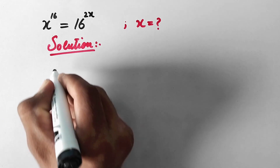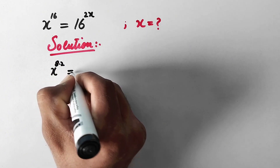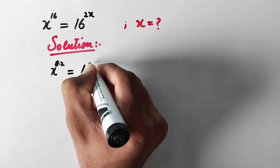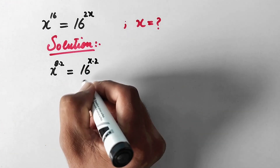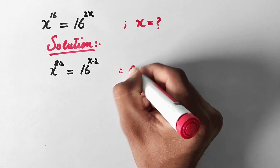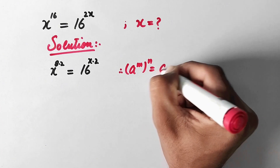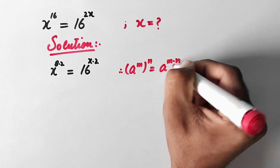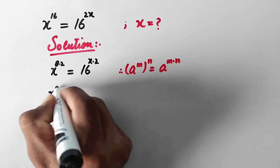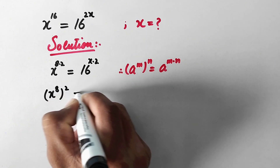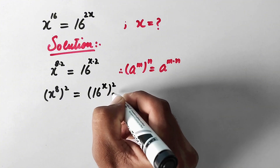In the first step we can write x to power 16 as 8 times 2 equals 16, and 2x can be written as x times 2. As we know the rule of exponents — a raised to power m to power n is the same as a to power m times n — so according to this rule we can write these values in the form x to power 8 to power 2 is equal to 16 to power x to power 2.